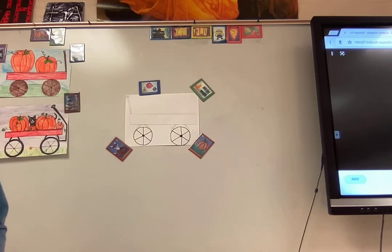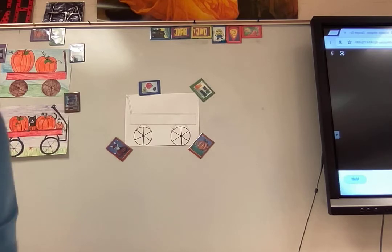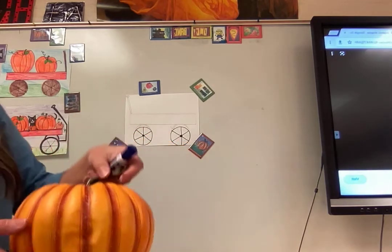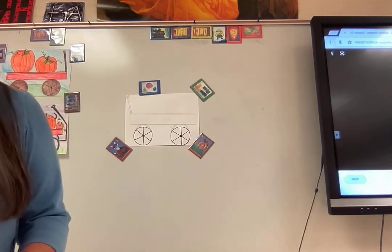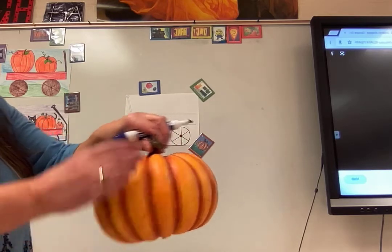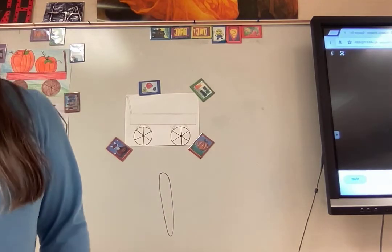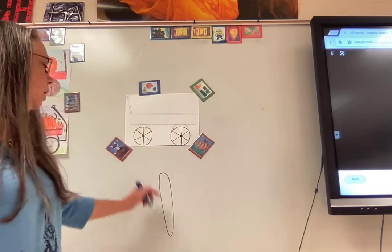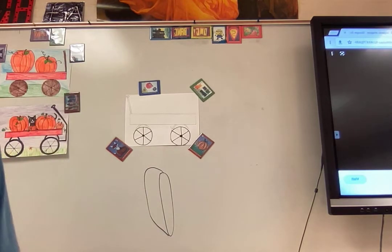Now we're going to draw natural shapes — things not made by people, like the pumpkin. When we draw our pumpkin, we'll use lines that aren't necessarily geometric. We're going to start with the shape of one section — the part that sticks out the most in the front of a pumpkin. It's kind of a long, skinny oval shape. So we'll start with that long, skinny oval for the first section, which will come down the farthest because it sticks out the most.